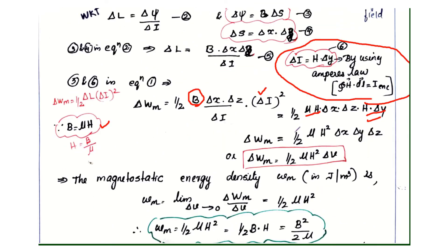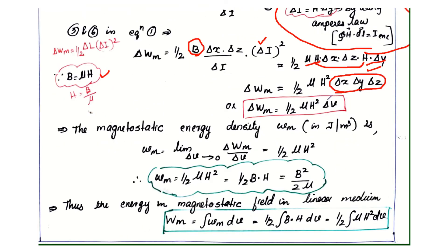Simplifying, we get δWm = ½ μH² · δx · δy · δz. We need to get the volume, so the final expression becomes Wm = ½ μH² · δv.